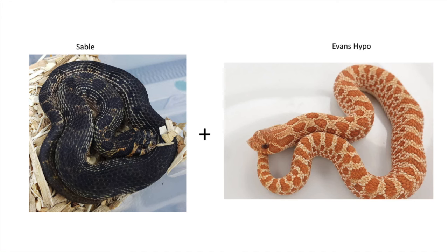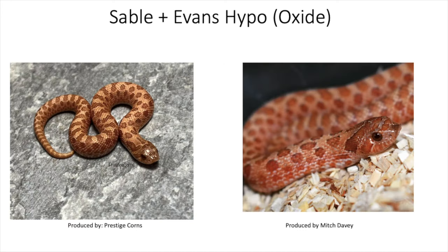The next combination is sable and Evans hypo, and this combination is called the oxide. Similar to the toasted caramel, not a lot of people are working with this combination. I couldn't find the conda version, super conda version, or any arctic versions in my search, so from my understanding only the visual oxide has been produced so far.